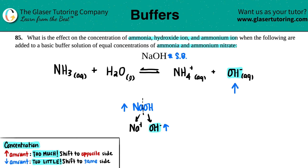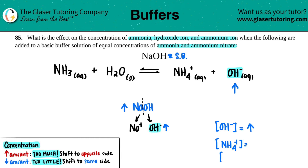So if I increase NaOH, I increase the hydroxide ion. My OH⁻ is going to increase — that answers one of the questions. What happens to the concentration of hydroxide? That is increasing. Now from that, we have to figure out what's happening to the ammonium and what's happening to the ammonia, which is the NH₃.